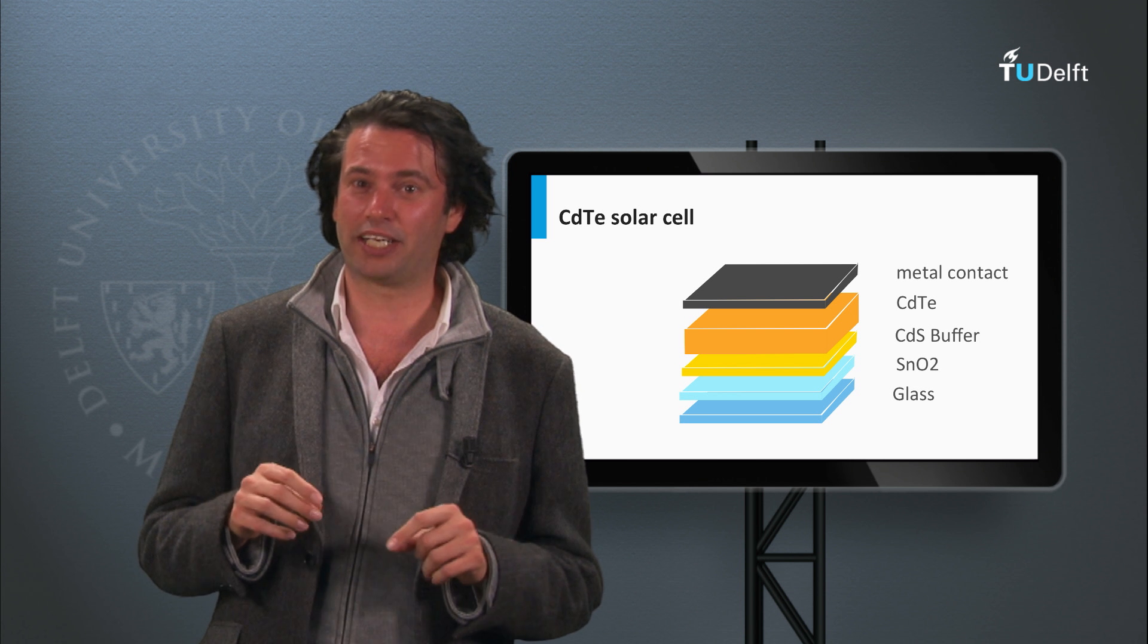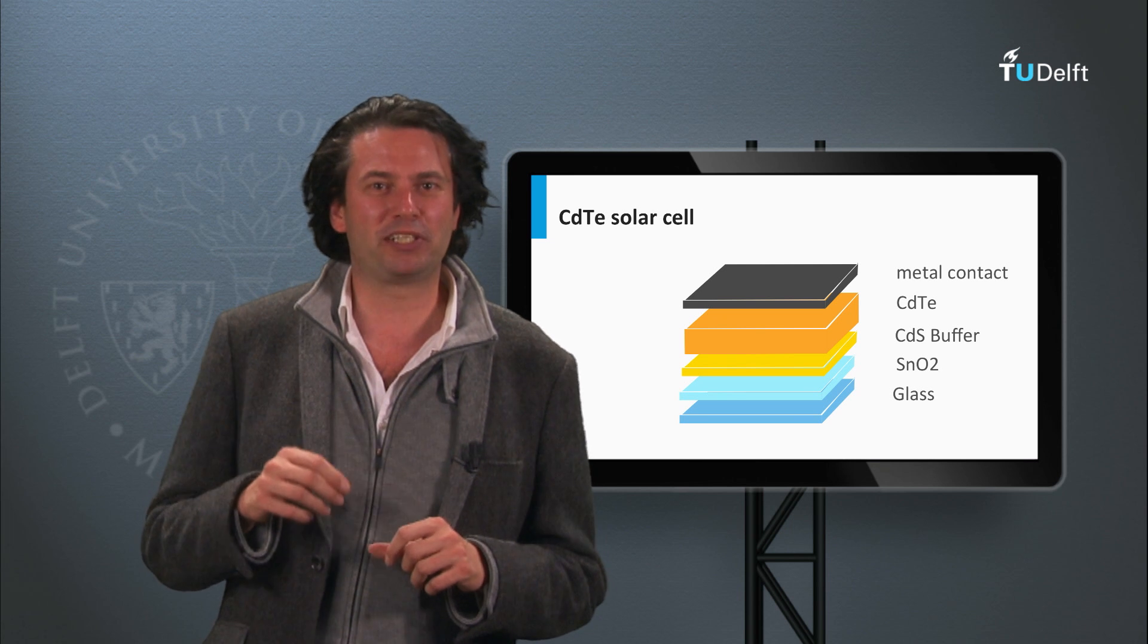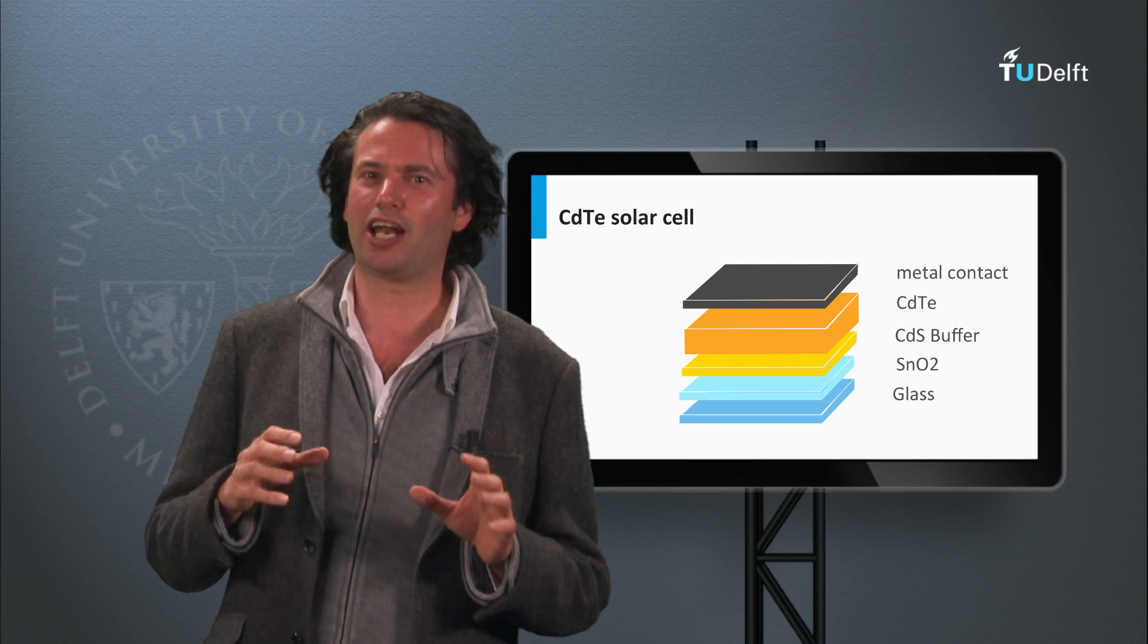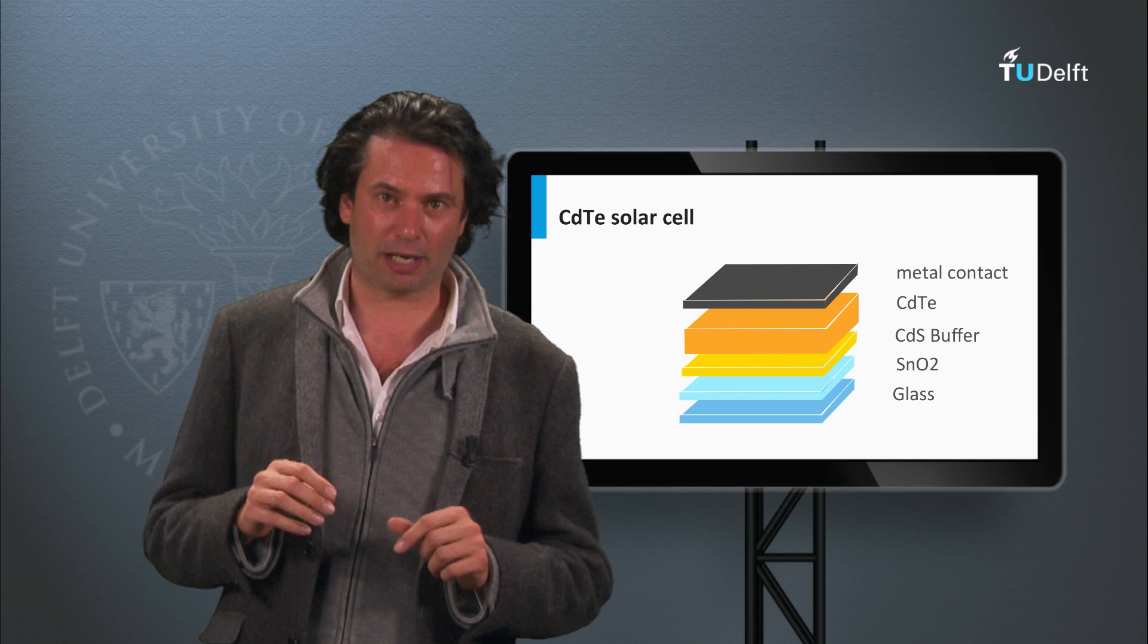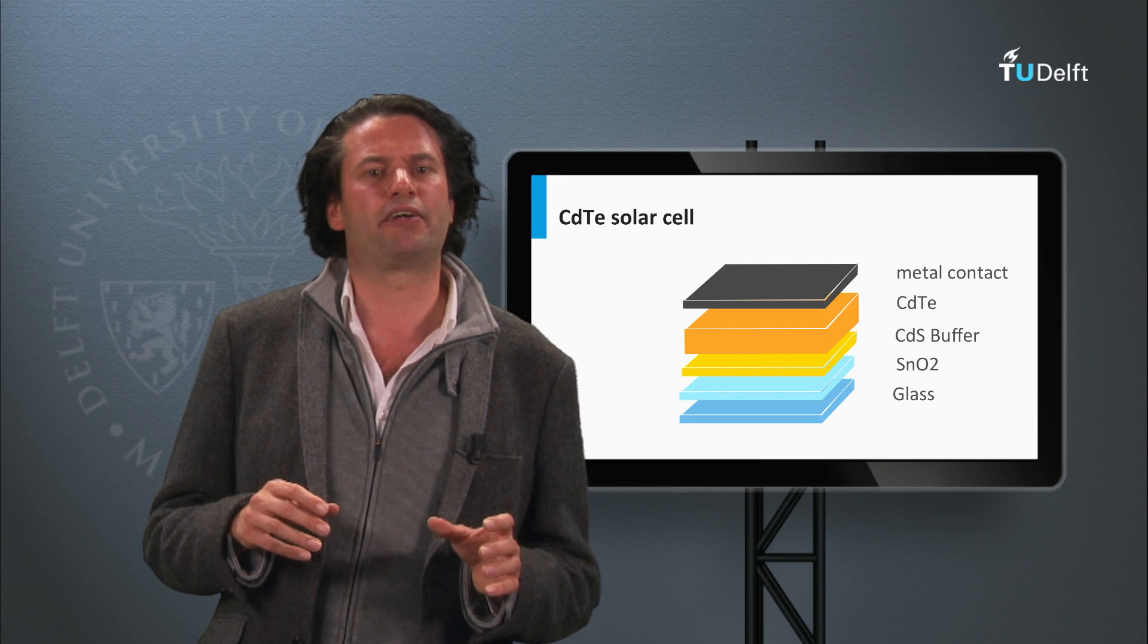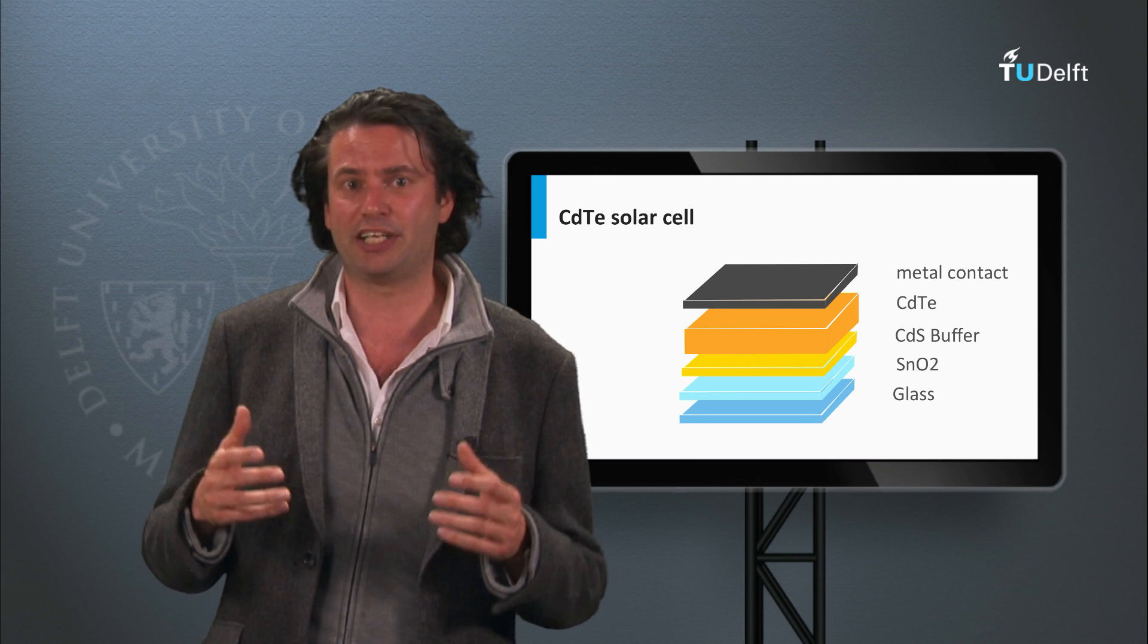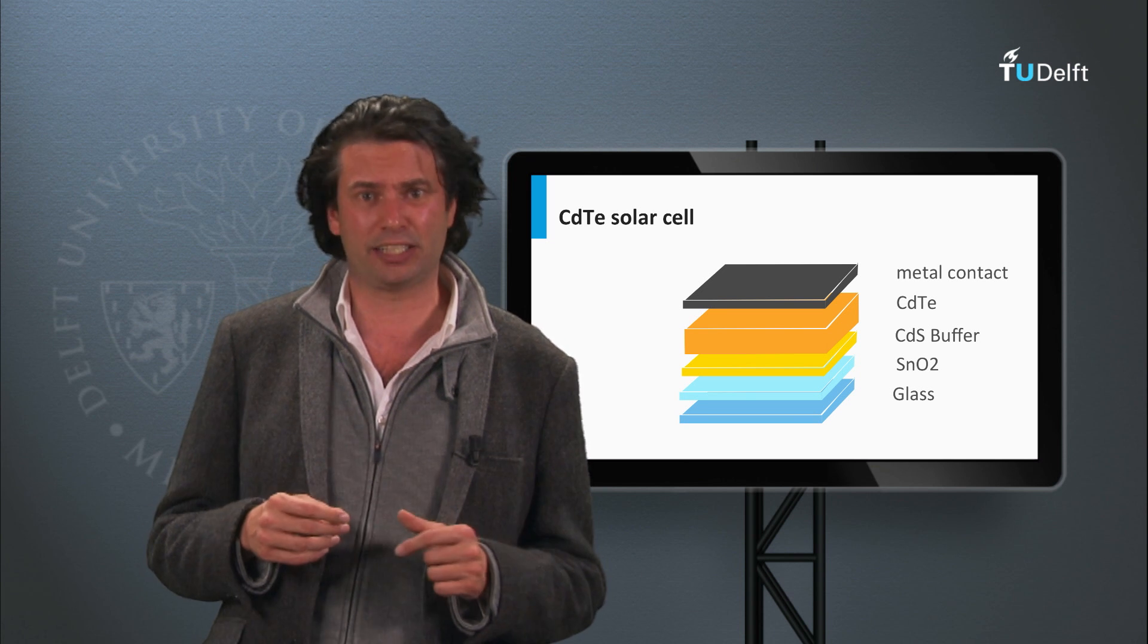Making a good backcontact on cadmium telluride is rather challenging. The material properties of cadmium telluride do not allow a large choice of acceptable metals. Heavily doping the contact area with a semiconductor material improves the contact, however achieving high doping levels in cadmium telluride is problematic.